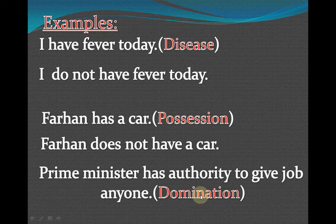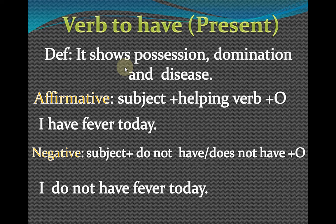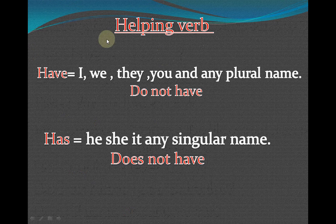To summarize: whenever we need to show position, property, or domination in the present tense, we use 'what to have present' — also called 'has/have.' 'Had' is used for the past; 'have' and 'has' are used for the present. Keep two things in mind: first, make sentences according to the definition — disease, position, and domination; second, know the formula for affirmative, negative, interrogative, and interrogative plus negative. Also know clearly which helping word is used with which subject.